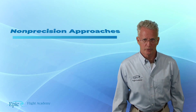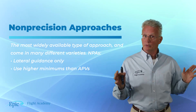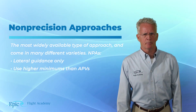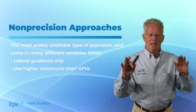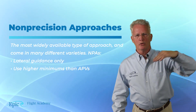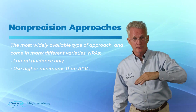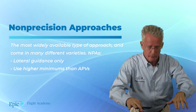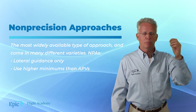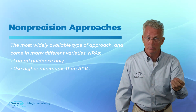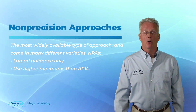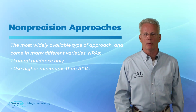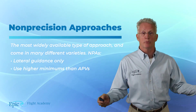Non-precision approaches are the most widely available type of approach and they come in many different varieties. What makes a non-precision approach is that they have lateral guidance only — in other words, there is no glide slope or vertical guidance. They guide the aircraft laterally to the runway and get you down to an altitude called the MDA, or minimum descent altitude, which is why non-precision approaches generally have higher minimums than precision approaches.